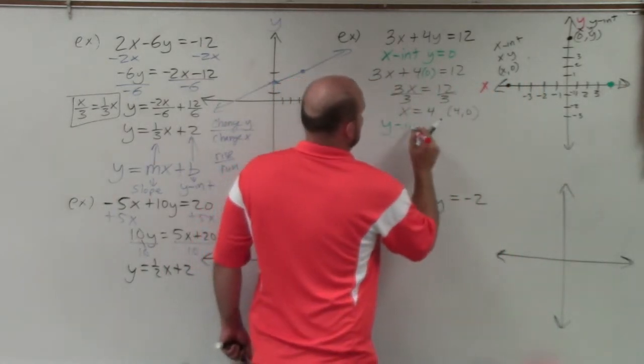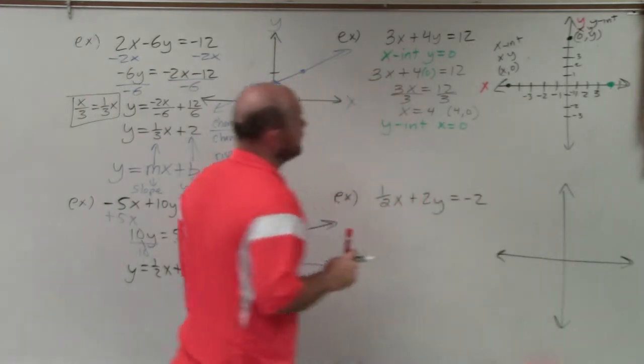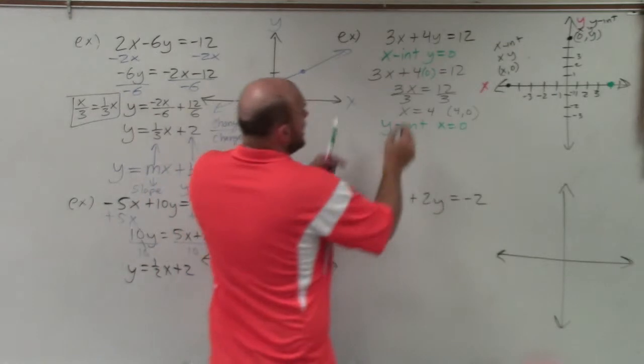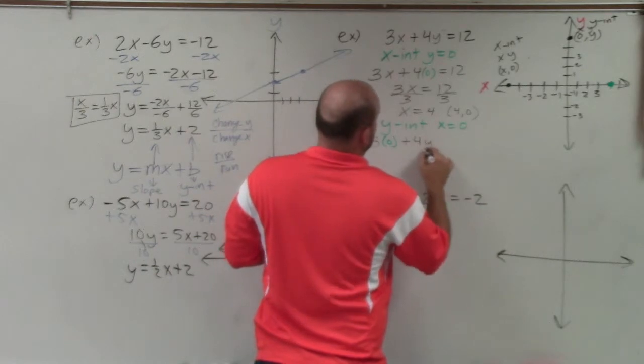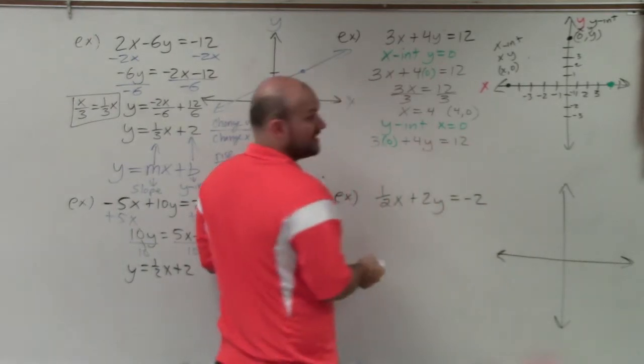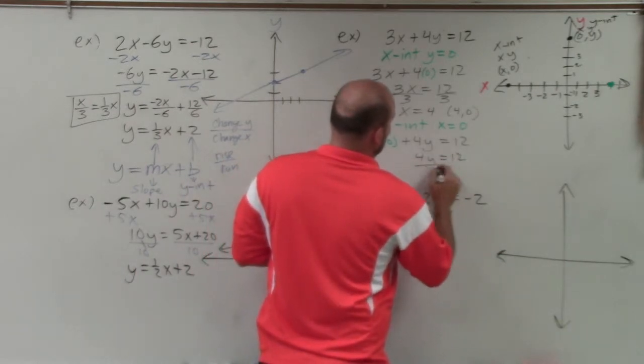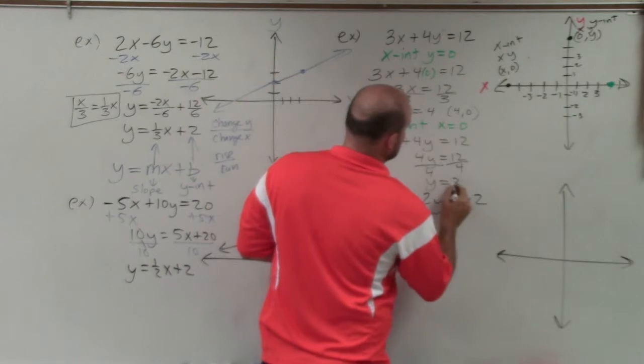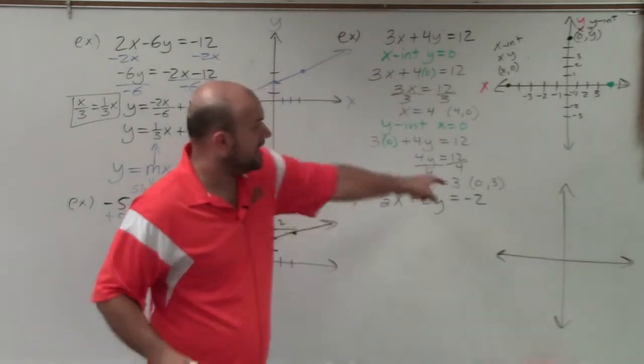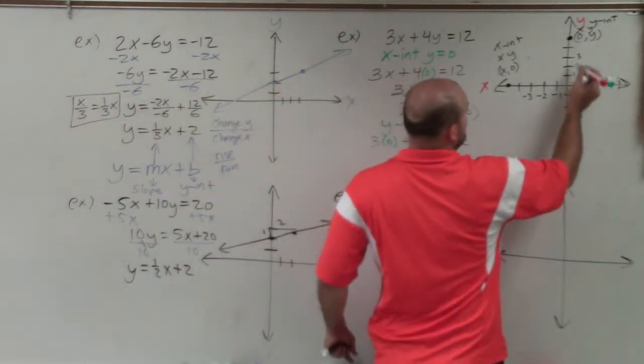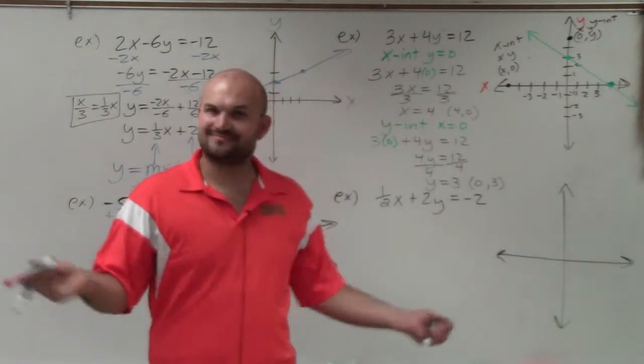Then you find the y-intercept. So if y is 0 for the x-intercept, x is equal 0 for the y-intercept. So now, wherever there's an x, I plug in a 0, and then go and solve. Well, 3 times 0 is 0, so I'm left with 4y equals 12. Divide by 4, divide by 4, y equals 3. Or you could write that as the coordinate point, 0 comma 3. So now, I go to where 0 comma 3 is, which is right there. And then I connect my two points, and I have my graph. Ta-da! So I didn't even have to use slope-intercept form.